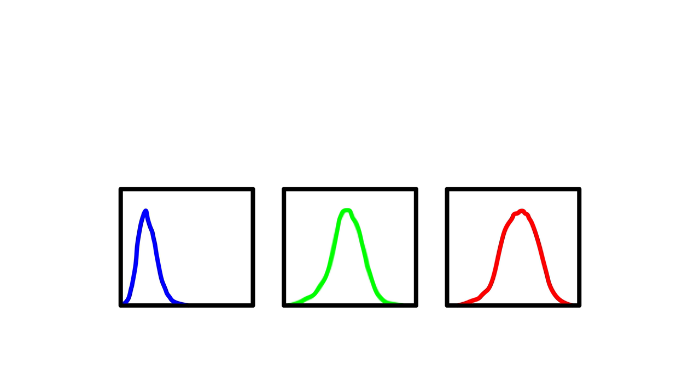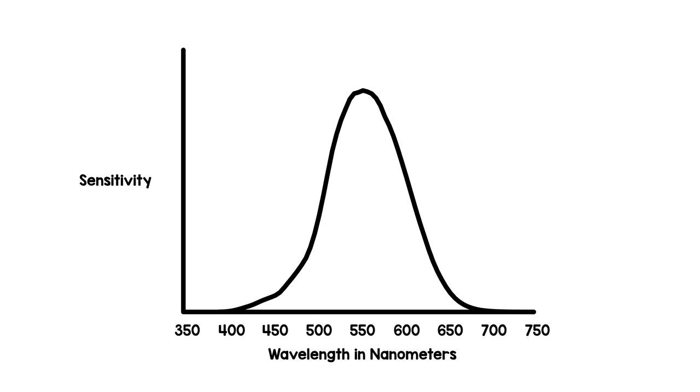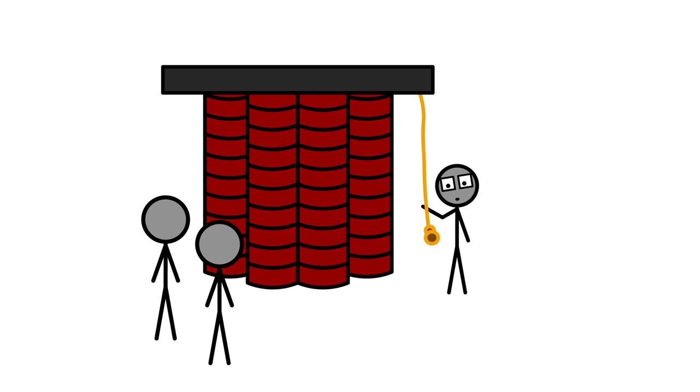If we now add together the sensitivity functions of all three types of cones, we get a brightness rating of all visible colors. To find the color we are most sensitive to, we must only follow the curve to its highest point. At a wavelength of 555 nanometers lies the color brightest to the human eye.